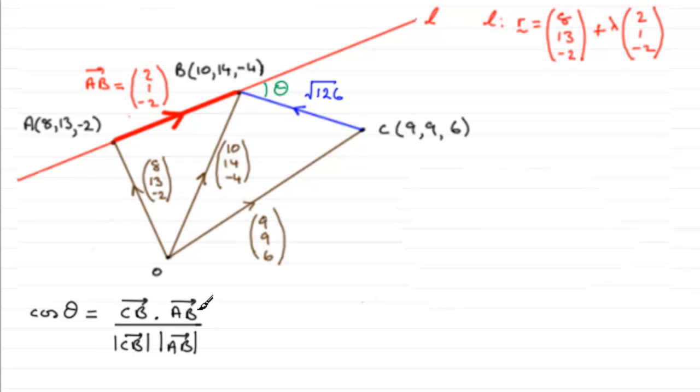So, CB dotted with AB, well, let's first of all put in our vectors for C to B, and I'm going to have to come down here because we're going to be a bit pushed for room. We've got cos theta then, equals C to B.